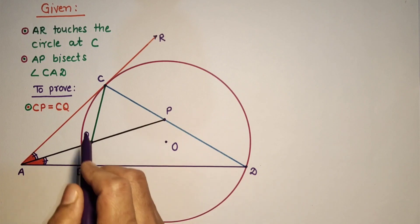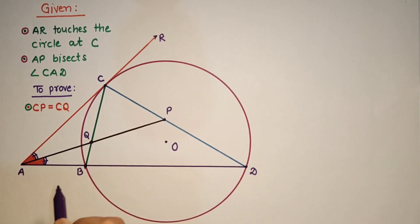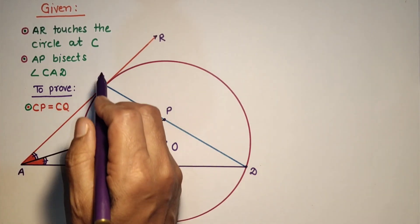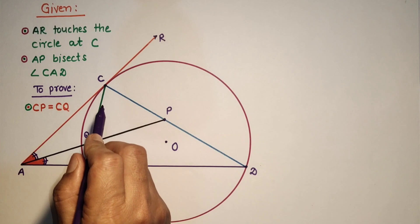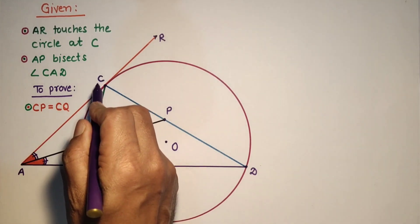AP bisects the angle CAD and AP intersects chord CB at point Q. So we have to prove that CP is equal to CQ.